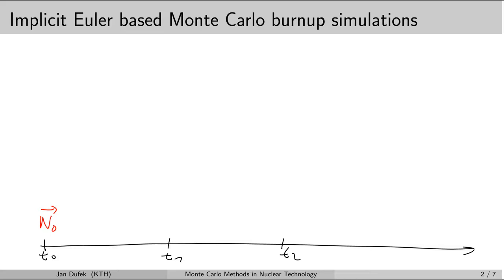The problem is that we don't have the flux corresponding to time T1. We have the system given by the nuclide field N0, and all we can do at this point is calculate the flux corresponding to this system, giving us flux phi 0.